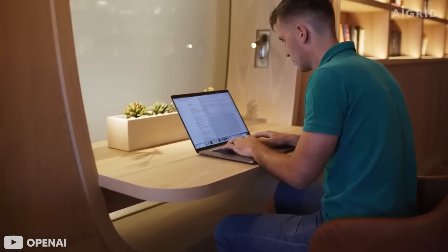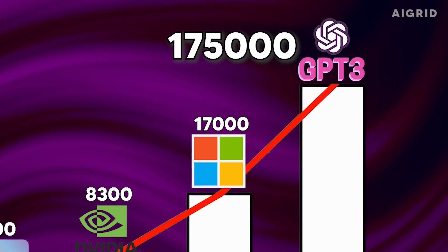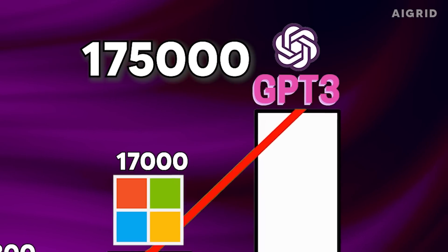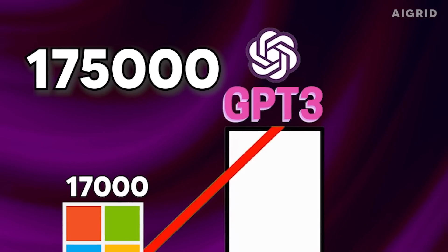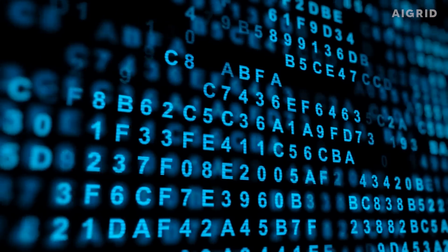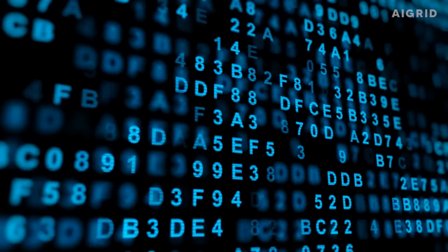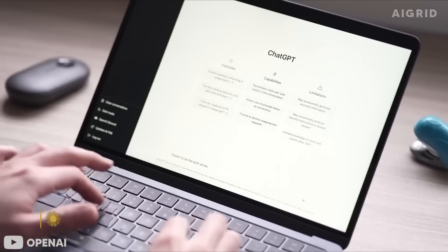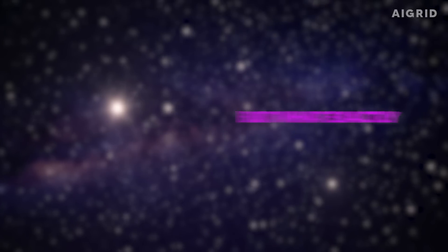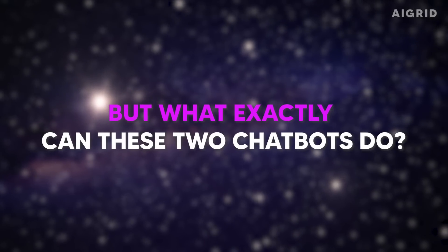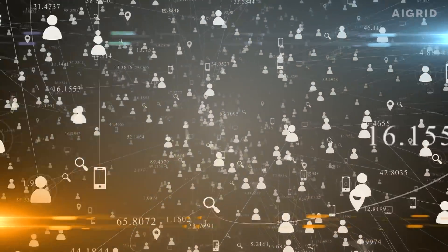If you thought the 175 billion parameters in GPT-3 were the best OpenAI can come up with, wait till you see how much GPT-4 is expected to have. GPT-4 will probably come with 170 trillion parameters, making it much bigger and more effective. It will be able to process and produce text even more accurately and fluently.